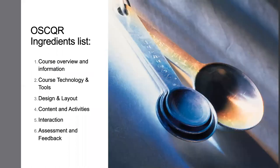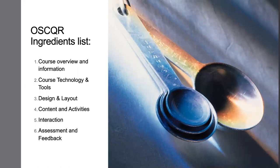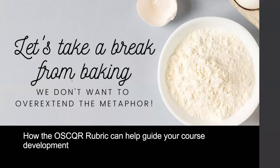Let's talk about the OSCAR ingredients list, broken down into six standards: course overview and information, course technology and tools, design and layout, content and activities, interaction, and assessment and feedback. I'm going to cover each of these standards in more detail in subsequent slides. But in order to do that, we have to take a little break from baking, because I simply could not extend this metaphor that far to cover the OSCAR rubric.